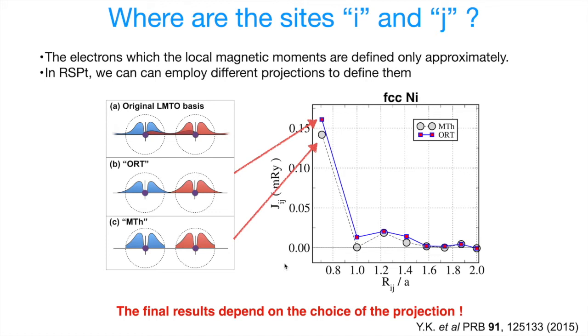So here is an example of FCC nickel, taken from one of our papers. And as you can see, both projections give quite consistent results. If you were to calculate the ordering temperature, you might see a little differences.